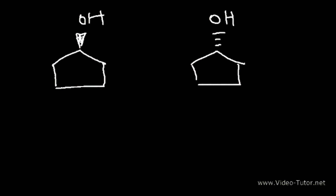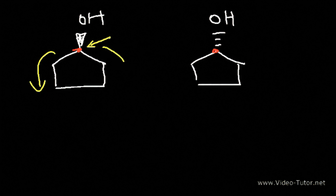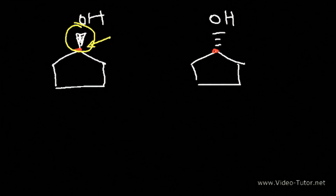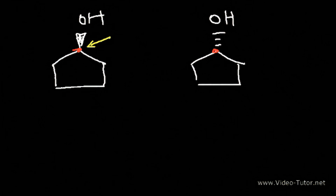Now what about these two — are they identical or are they different? These two molecules are identical. This carbon is not chiral; the left side is identical to the right side. Because the carbon is not chiral, there's no need to put it in the front or in the back. So these are identical molecules.